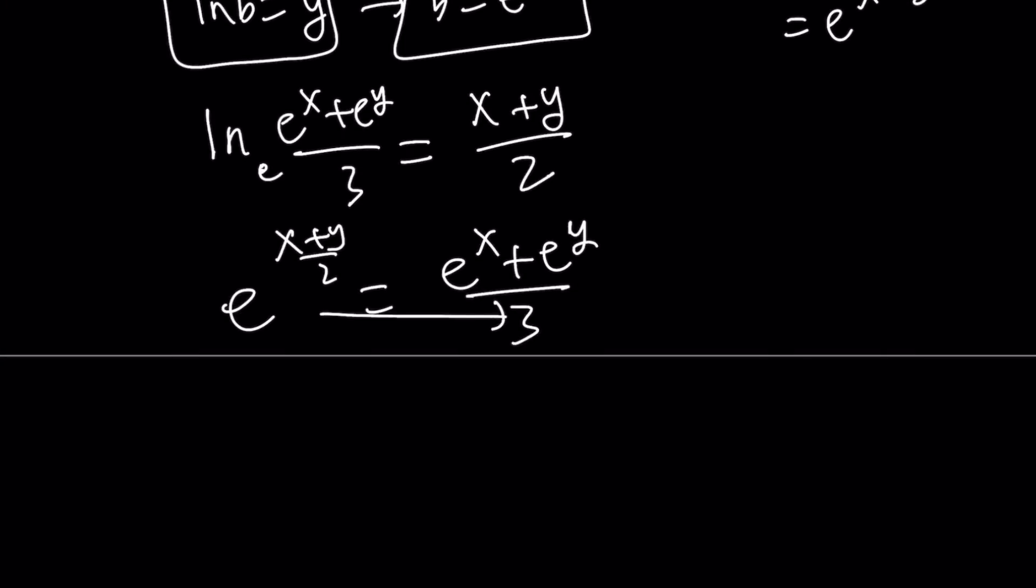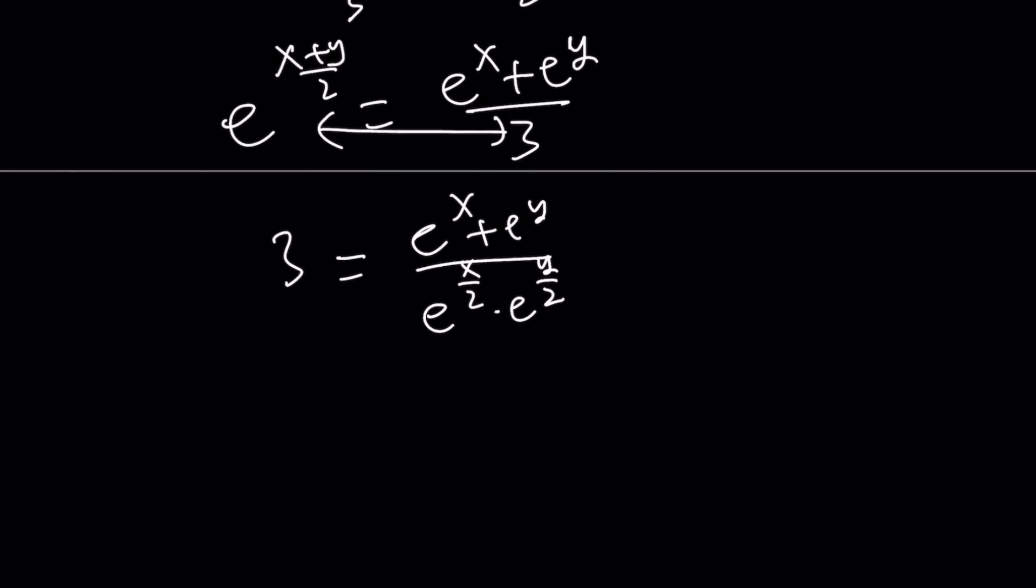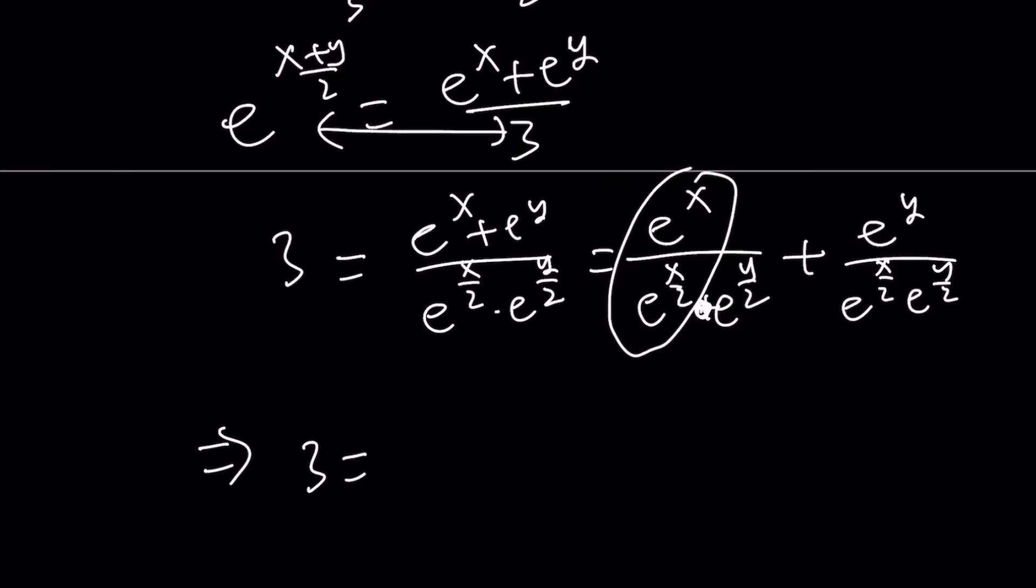So we get an equation like this. And what are we looking for? We're looking for a/b. And a/b here is e^x/e^y. Or you can write it as e^(x-y). So here's what we're going to do. Hocus pocus, we're going to switch these around. So 3 = (e^x + e^y)/(e^(x+y)/2). But I'm going to write it as e^(x/2) * e^(y/2) because their sum is that. And from here, I can split it up: e^x/(e^(x/2)) times e^(y/2) plus e^y/(e^(x/2) * e^(y/2)). Make sense? So now I can divide these by subtracting the exponents. So this gives me 3 = e^(x/2)/e^(y/2) + e^(y/2)/e^(x/2).